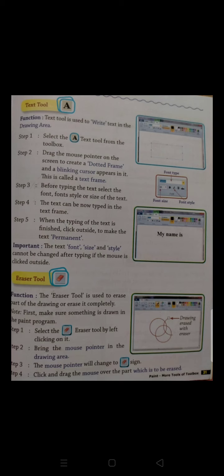We will select Text Tool from the toolbox, then create a dotted frame, then before typing we will select our font, font style and size, then type our text, and when we finish typing, we will click outside on the white area so that our text can be permanently saved.